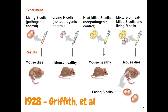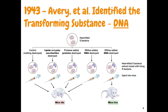Griffith was not able to determine whether it was DNA, lipid, RNA, protein, or some other molecule causing the transformation. But three scientists in 1943 — Avery, MacLeod, and McCarty — were able to identify that the transforming substance was actually DNA.